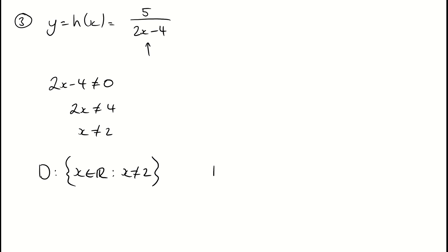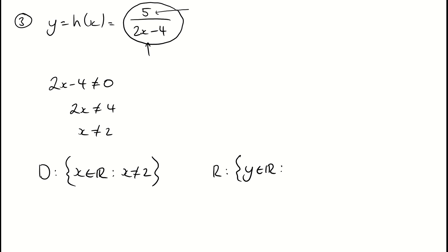Looking at the range for this function, y is just any real number, but y can never be 0. To make this fraction equal to 0, I would need the numerator to equal 0, which I can't — the numerator is fixed at 5. There's no way to get a 0 in the numerator, so y cannot ever be 0, but it can be anything else. So y is not equal to 0.